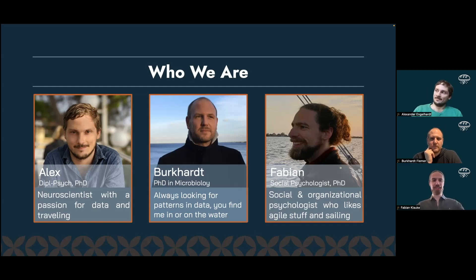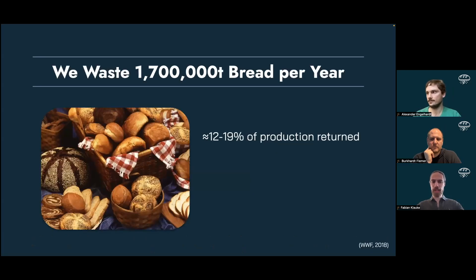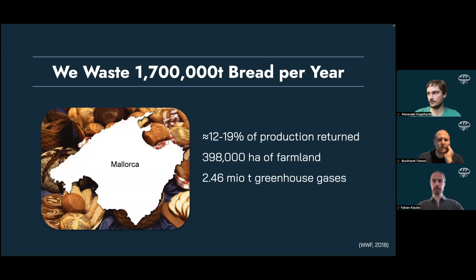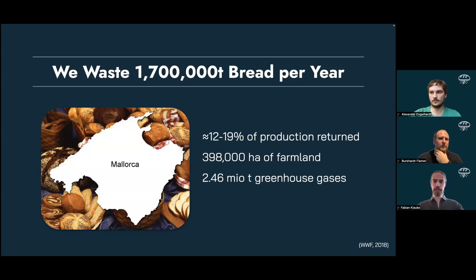Today I want to talk with you about food waste. Food waste is quite a big problem. In Germany we waste 1.7 million tons of bread alone per year. Part of that is 12 to 19 percent of any bakery's production that is returned — not even sold — and basically thrown away. This whole bread waste is equivalent to roughly 398 hectares of farmland, which is roughly the size of Mallorca. That bread's production emits about 2.46 million tons of greenhouse gases, which is almost as much as all of Iceland emitted in 2019.